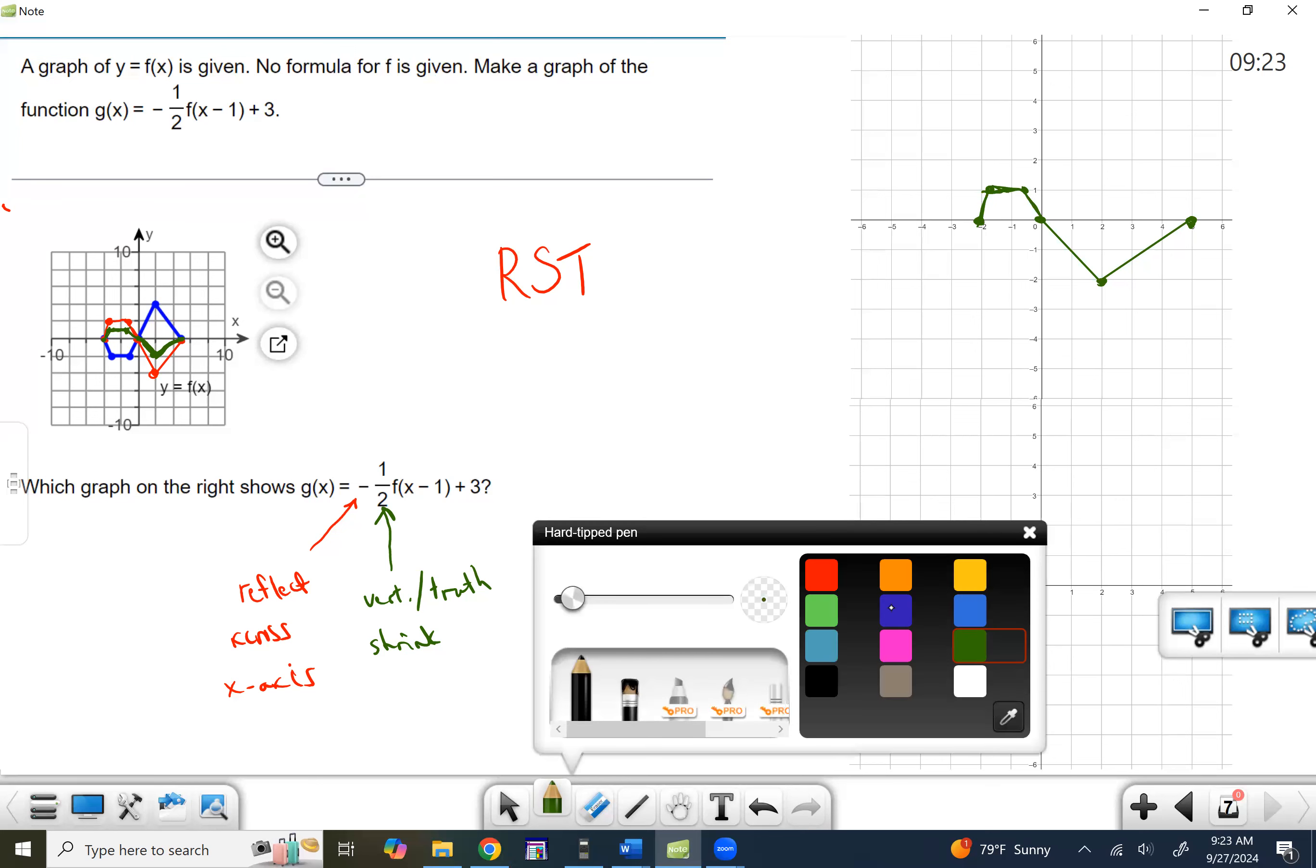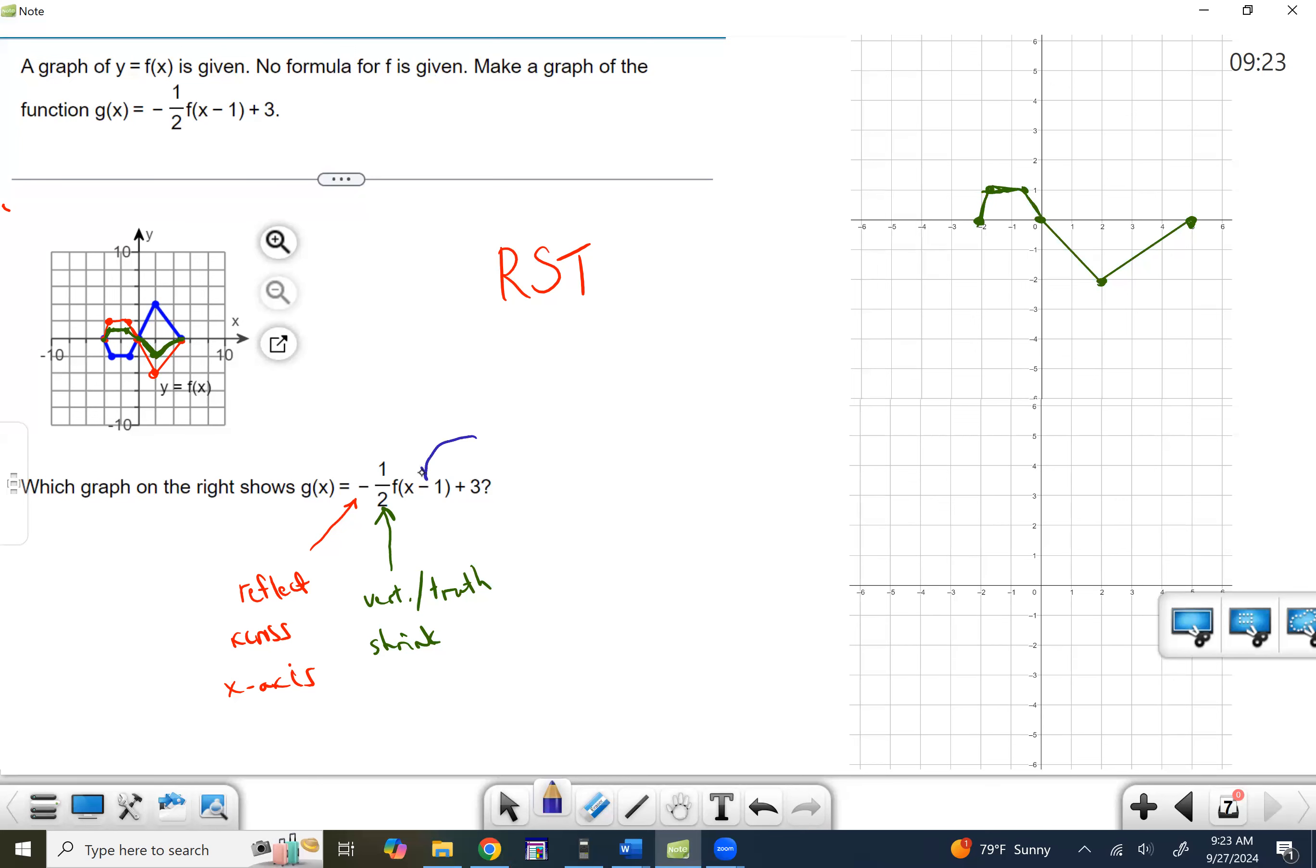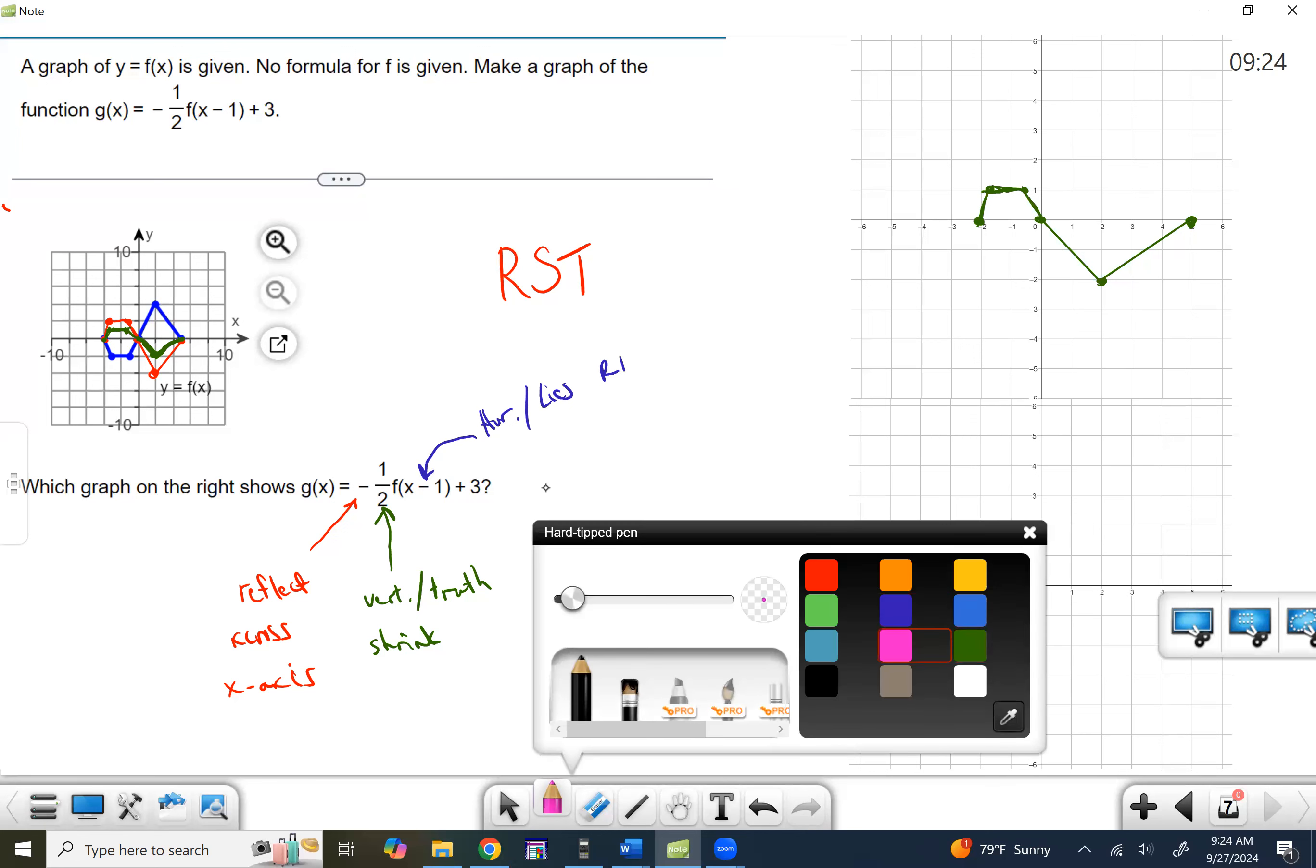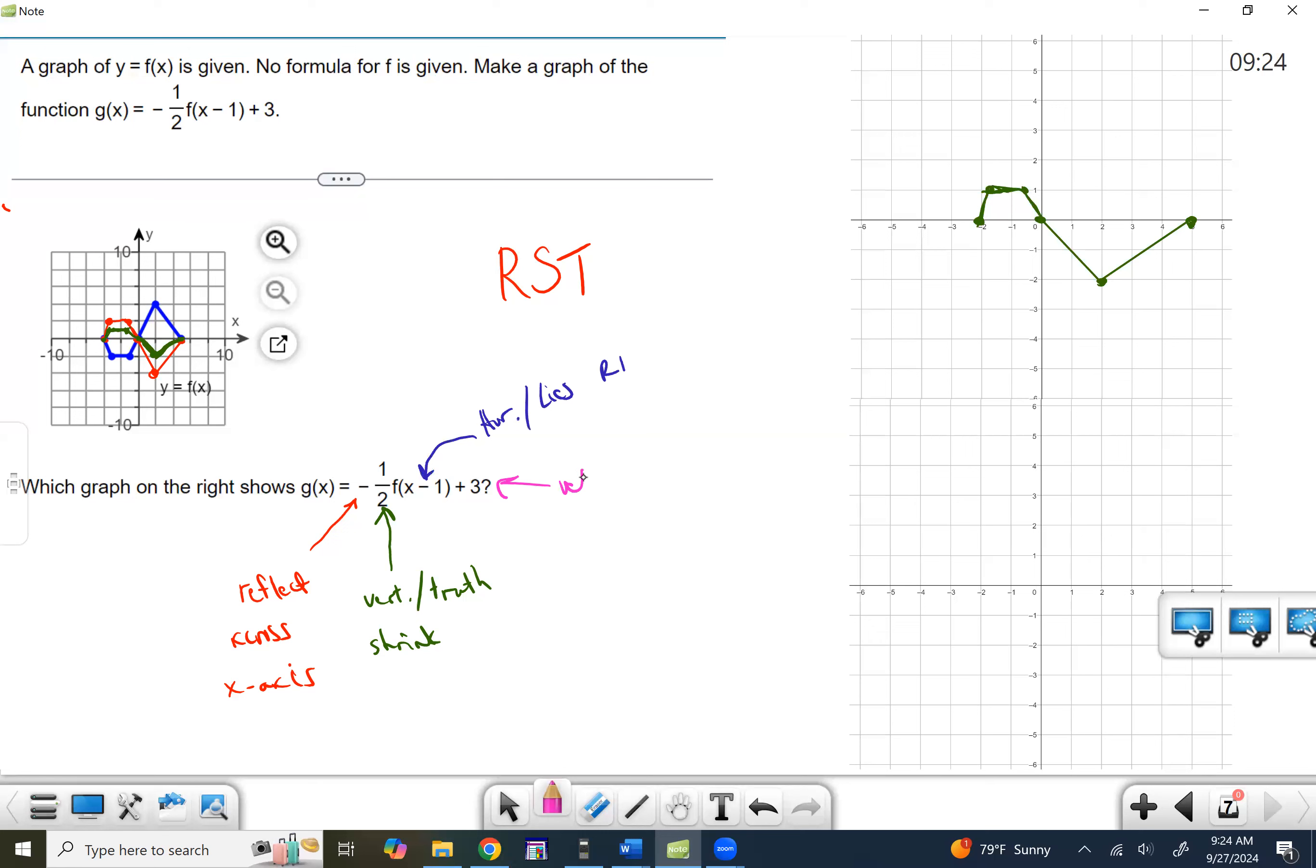So this one is the horizontal because it's inside and it lies. So instead of to the left one, we're going to go right one. And then this one here on the back end is vertical and it tells the truth. So plus three really is going to be up three.